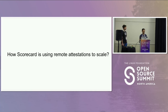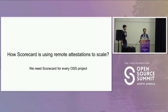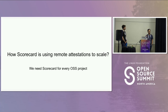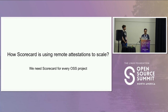This talk will also address how Scorecard is using remote attestations to scale. We need Scorecard for every open source project. Scorecard comes in different flavors: there's a CLI, a GitHub action, an API, and a BigQuery dataset. Scorecard currently scans about a million repositories on a weekly basis and stores those results in the API server and BigQuery table. But we want to scale to every repository. The limitations are hardware and GitHub tokens, which is why we're using the Scorecard GitHub action with remote attestations to scale.